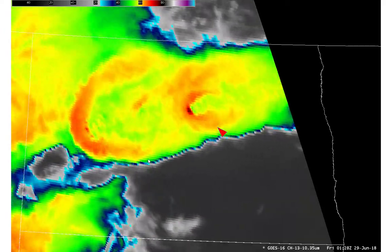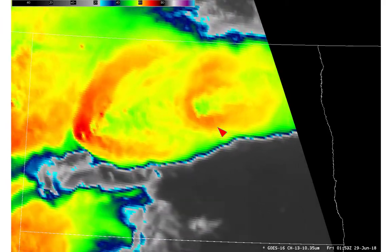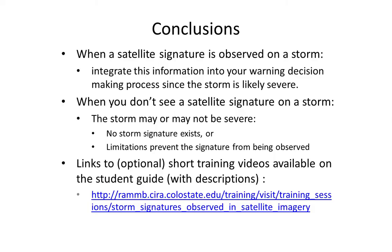In summary, if you do observe the enhanced V signature, make use of it in your warning decision making process. In conclusion, when a satellite signature is observed on a storm, consider yourself fortunate that the feature was able to be observed and integrate this information into your warning decision making, since the storm is likely severe. If you see multiple signatures, that should increase your confidence. When you don't see a satellite signature, the storm may or may not be severe — we can only conclude that either the signature doesn't exist or limitations prevent it from being observed. Links to optional short training videos covering additional cases will be made available on the student guide page.